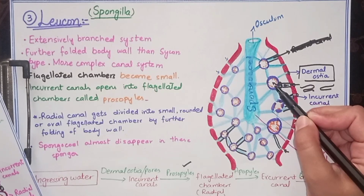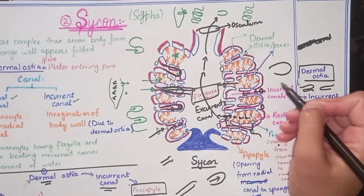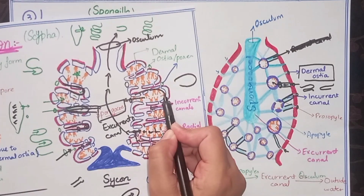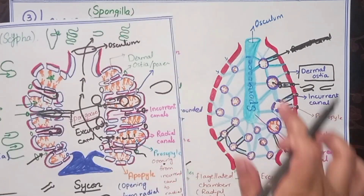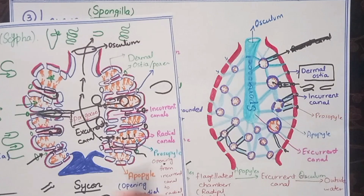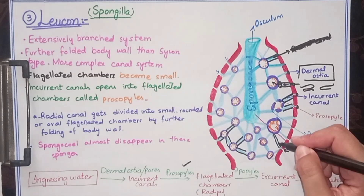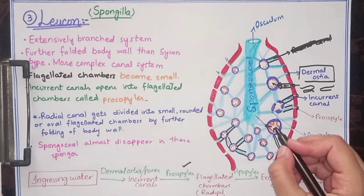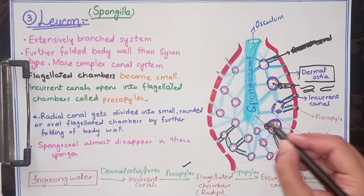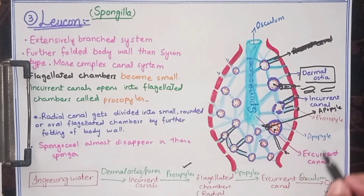The radial canal is lined by very small flagellated structures known as choanocytes. In Leucon, these radial canals move inside and form rounded or oval small structures — these are all flagellated chambers. This is a further advancement in Leucon body form. Water enters the radial canals, the flagella start beating, and water is released from the radial canal through another opening known as the apopile.